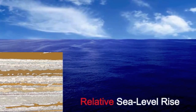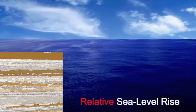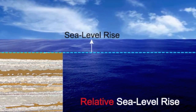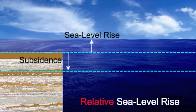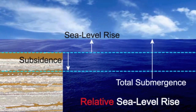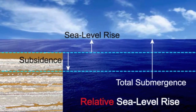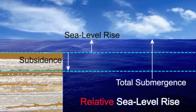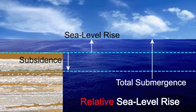Relative sea level rise is the combination of eustatic rise in sea level and land movement, and is unique for each location. The combination of the two processes determines the rate of submergence in each coastal area.